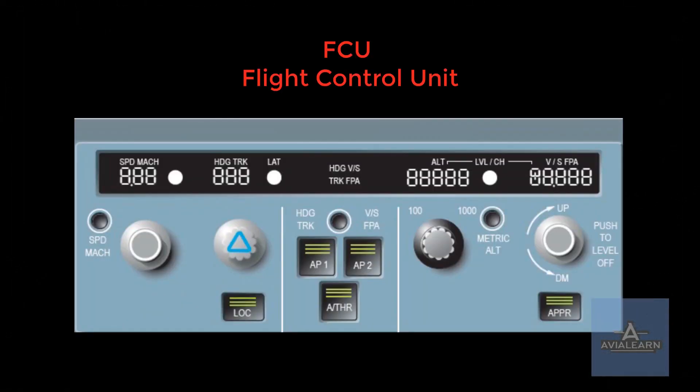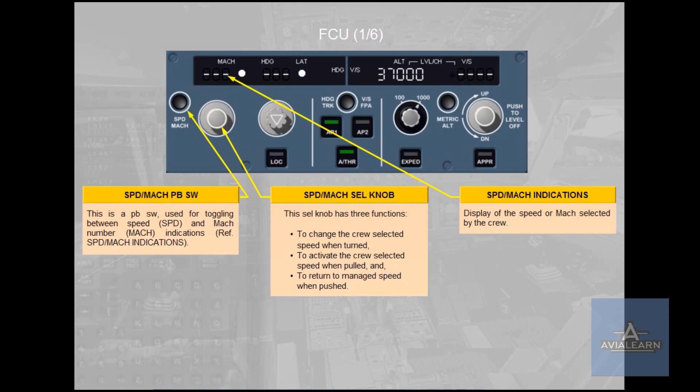The Flight Control Unit — the Speed Mach Push Button Switch. This is a push button switch used for toggling between speed and Mach number indications. The Speed Mach Selector Knob — this selector knob has three functions. First,